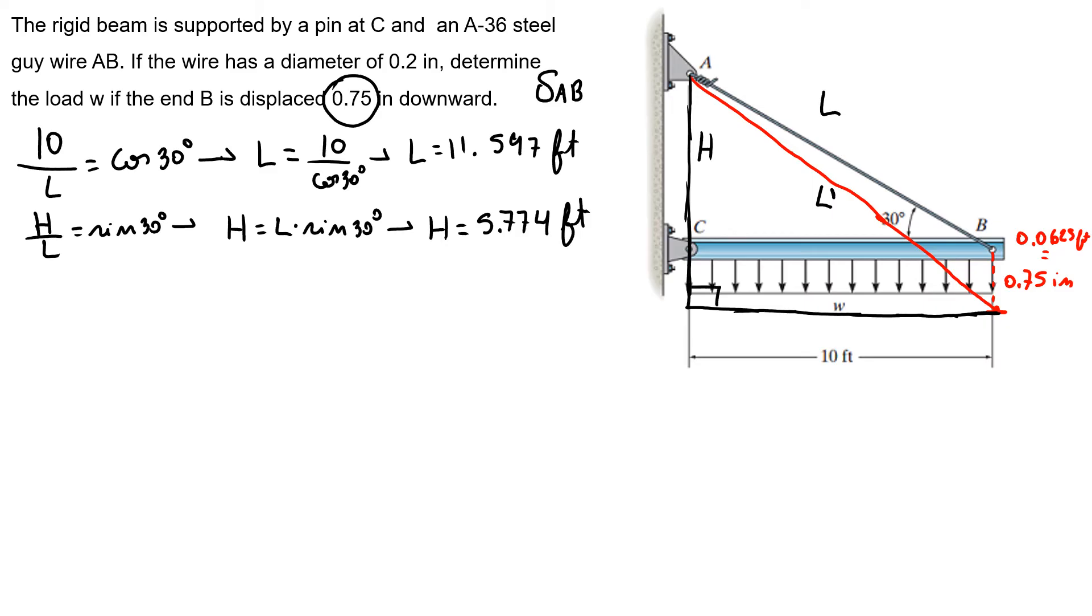How can I discover my L prime? This is a right triangle, so I can use L prime squared equals 10 squared plus H that I discovered in my original triangle plus 0.0625 feet squared. So I can find that my L prime is 11.578 feet.